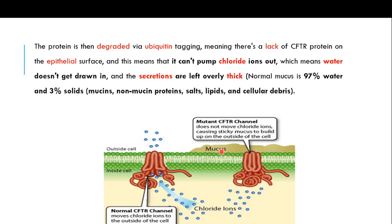This thick mucus is responsible for the symptoms of cystic fibrosis. When chloride ions cannot be pumped out of the cell, water doesn't get drawn out and secretions are left poorly hydrated and thick. Normal mucus is 97% water and 3% solids, but in cystic fibrosis there is a deficiency of chloride ions on the surface, so water is not drawn towards it, making the mucus thick.